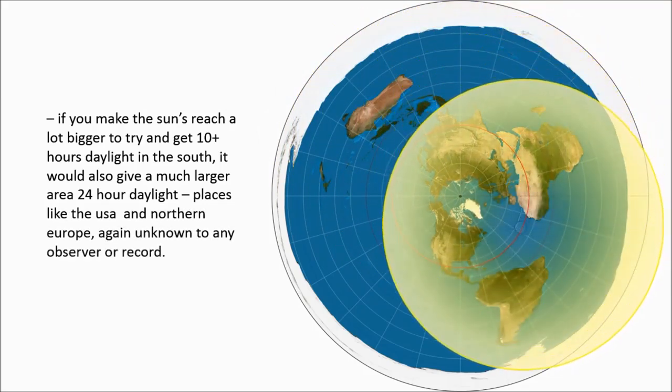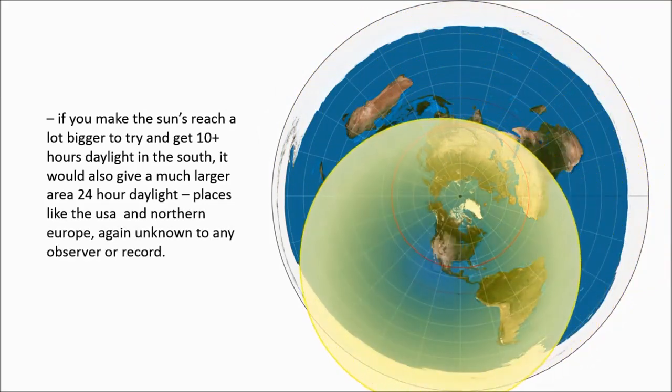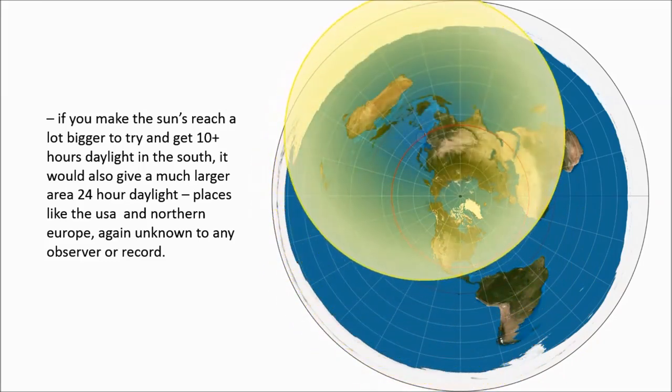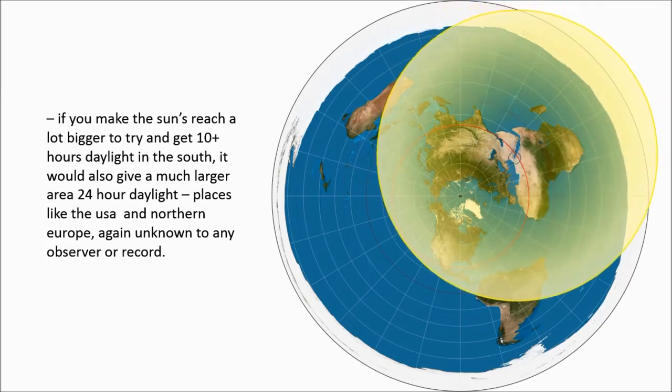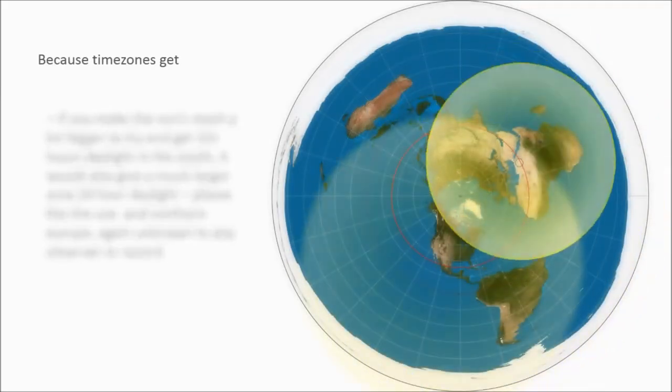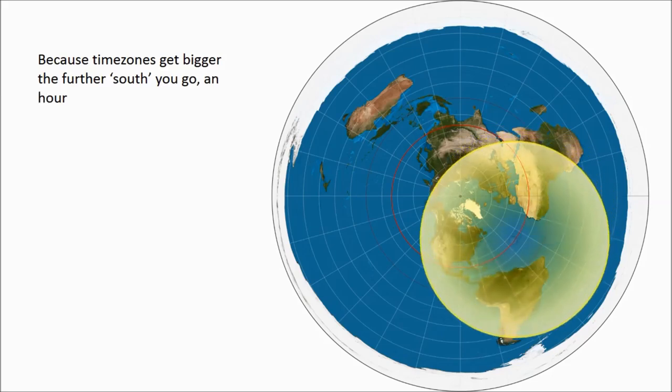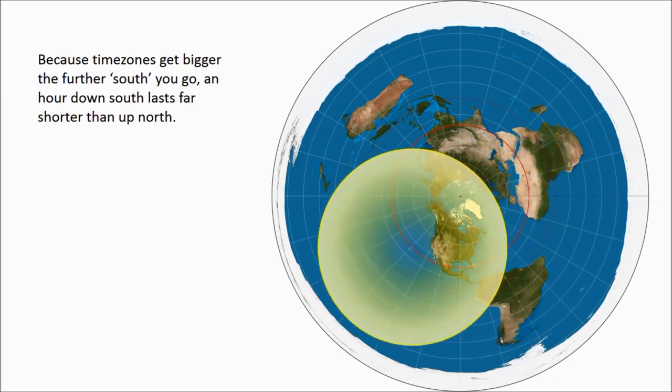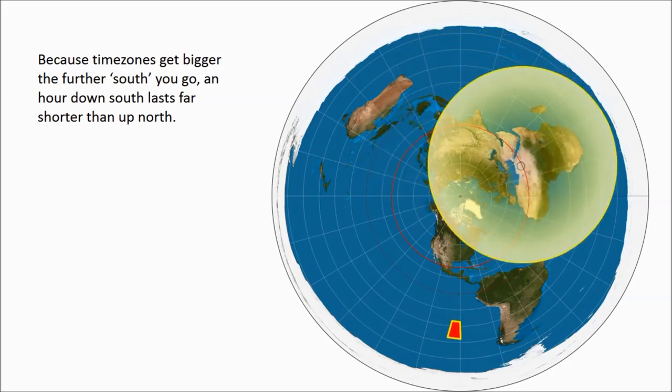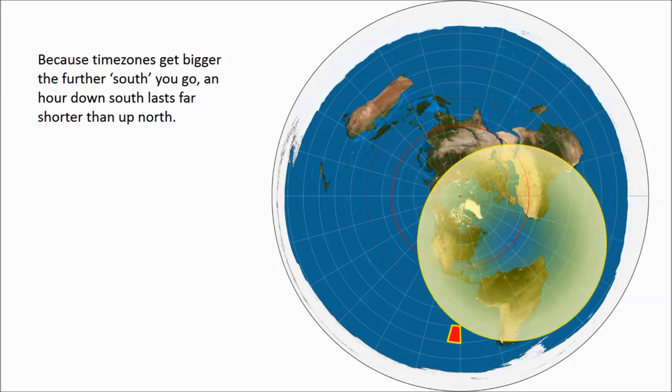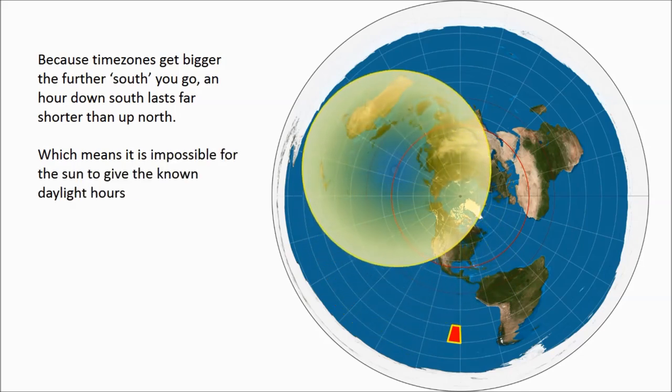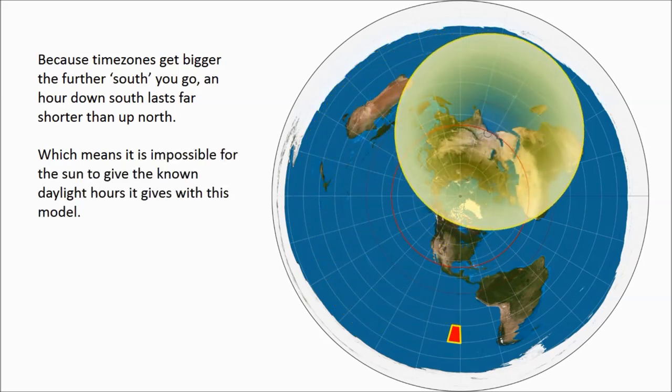But on the flip side, if you look in the north now, everywhere within the tropic of cancer really is getting 24-hour light, which again, we know is not reality. It's inherently flawed because of the time zones. An hour up in Canada is worth 20 minutes down south and you're done. The sun's reach needs to be three times further down south. It doesn't make sense.